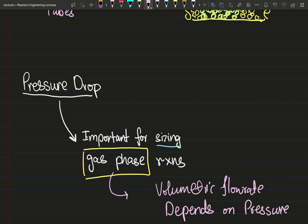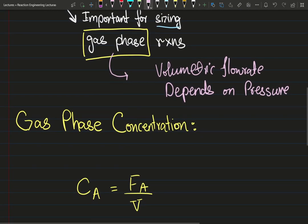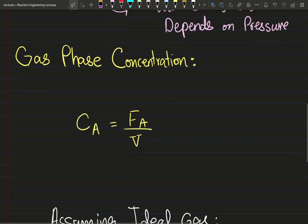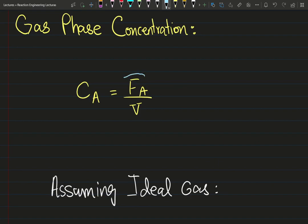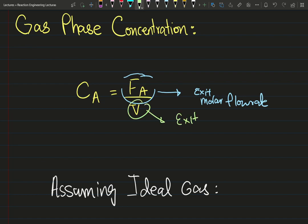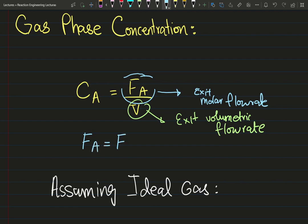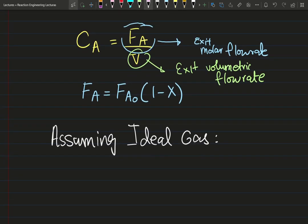That's just simple thermodynamics. Let's deep dive into gas phase reactions. First, we have the exit molar flow rate, and at the bottom we have the exit volumetric flow rate. Those two combine to give us the exit concentration of species A. The exit molar flow rate can be written as the inlet molar flow rate times one minus the conversion.